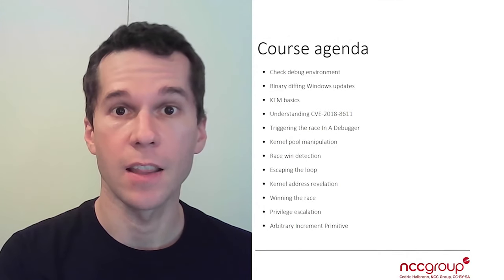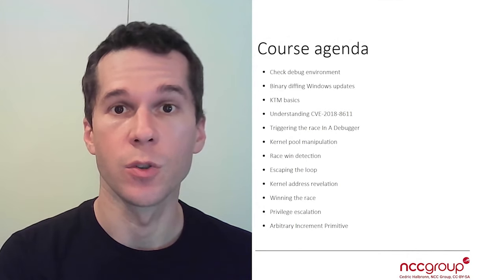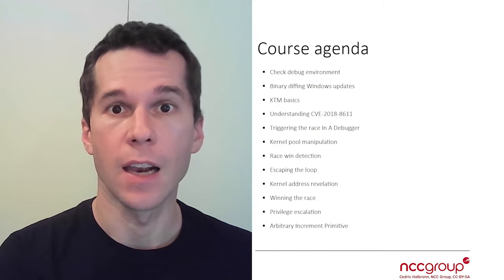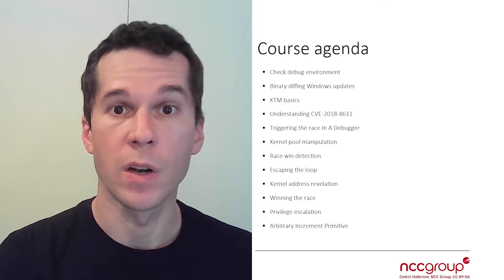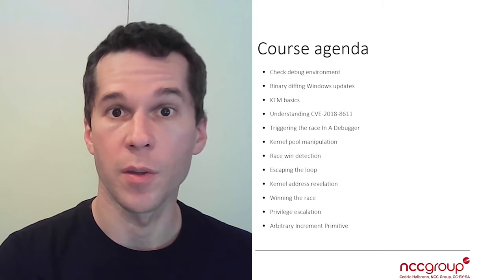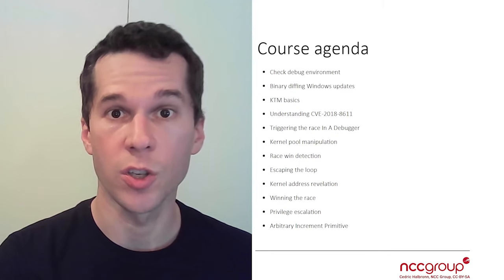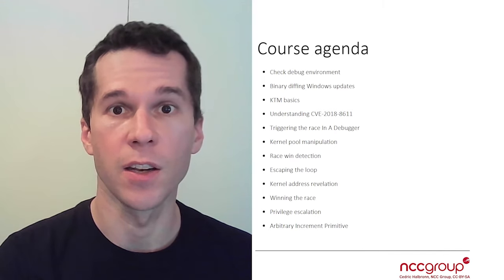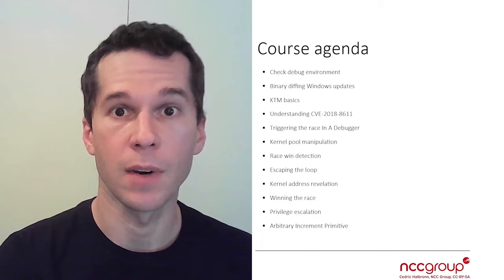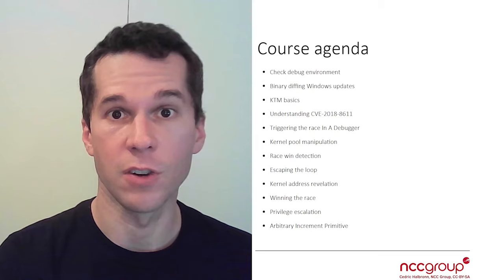We'll start by checking the debug environment required to do the whole training, building it on top of the DBG 3011 training and adding all the KTM specifics. We will do some binary diffing to locate where the bug is in the patch. We will explain some kernel transaction userland APIs that we can call from userland to trigger specifics in kernel land, and we'll go over some KTM — kernel transaction manager — structures in the kernel that are touched by the driver, which is called tm.sys or transaction manager.